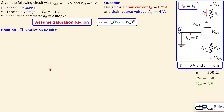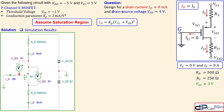Looking at the SPICE simulation results, the circuit shows the p-channel MOSFET with gate current of approximately three femtoamps, effectively zero. The source-gate voltage is three volts as calculated. RS is 250 ohms and RD is 500 ohms. The source and drain currents are both eight milliamps, and VSD is four volts — all matching our design targets.